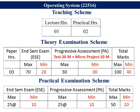The teaching scheme of this course is: you have to attend three lectures per week and two hours of practical per week. The theory examination scheme: you have to write a 70-mark paper and the time is 3 hours. Then you have to attempt two class tests, each of 20 marks. And you have to submit a micro project of 10 marks. So 70 marks plus 20 marks plus 10 marks — that is out of 100. For practical, 25 marks are given to the end trimester exam and 25 marks are given to the progressive assessment, making a total of 50 marks. So this course has a total weightage of 150 marks.